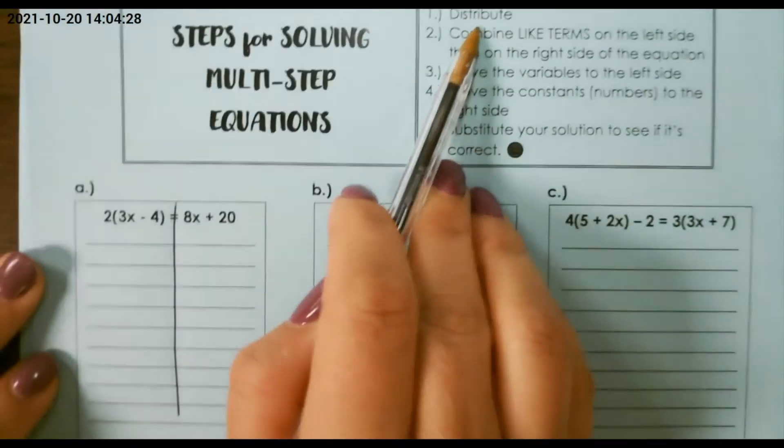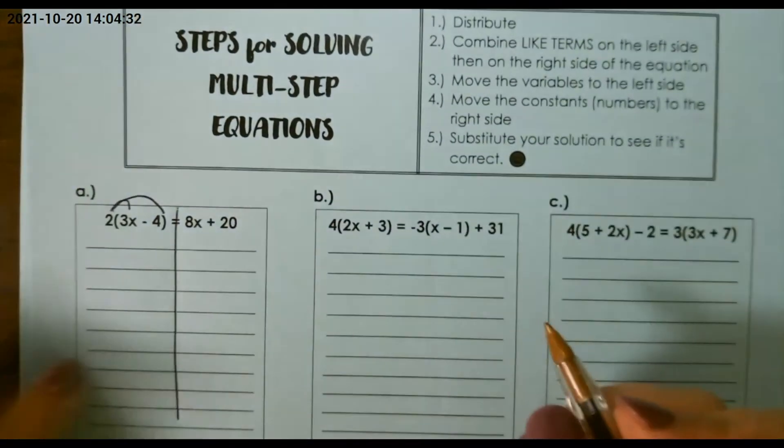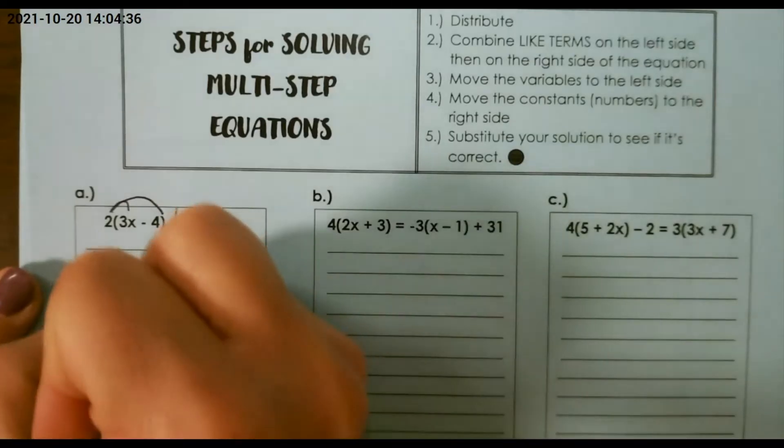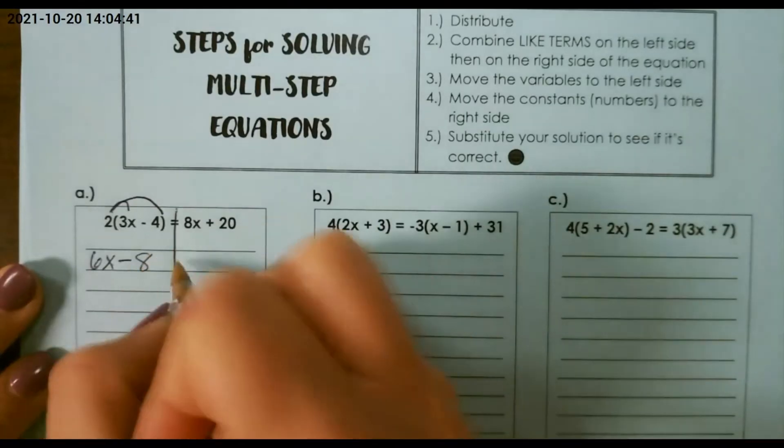For our first example, we're going to distribute first, so I'm going to distribute the 2 to everything inside the parentheses. Distribute means multiply, so 2 times 3x is 6x. There's a subtraction sign between them, and 2 times 4 is 8.